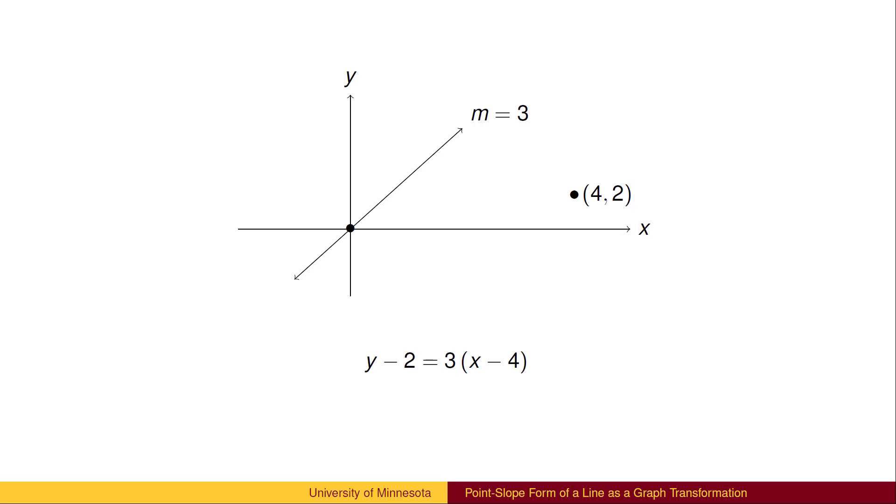We can then shift the graph up 2. This gives us the point-slope equation of the line.